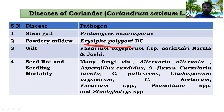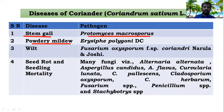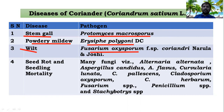The diseases of coriander include stem gall, which is the most important disease nowadays, caused by Protomyces macrosporus, an Ascomycetes fungus. Another disease is powdery mildew caused by Erysiphe polygoni. Wilt also occurs in severe conditions, caused by Fusarium oxysporum. Seed rot and seedling mortality are caused by several fungi like Alternaria, Curvularia, Aspergillus, Penicillium, and Fusarium — mostly saprophytic fungi causing rotting during germination.